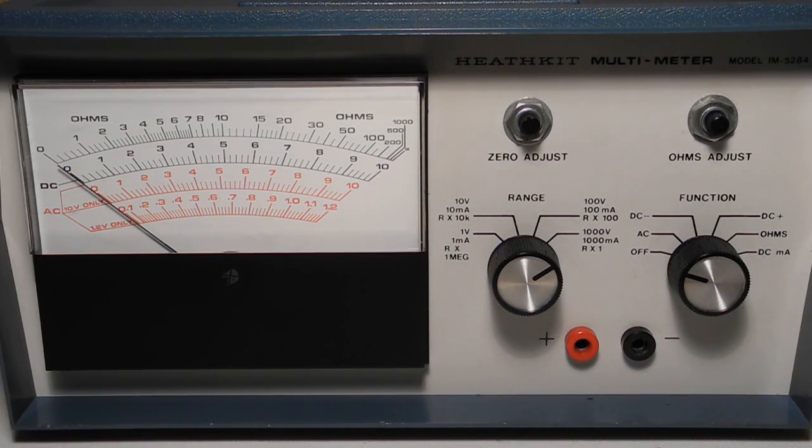It can measure DC current at four ranges from 0 to 1, 10, 100, and 1,000 milliamps at plus or minus 4% accuracy. And finally, it can measure resistance with ranges of R times 1, times 100, times 10,000, and times 1 million at plus or minus 3% accuracy.